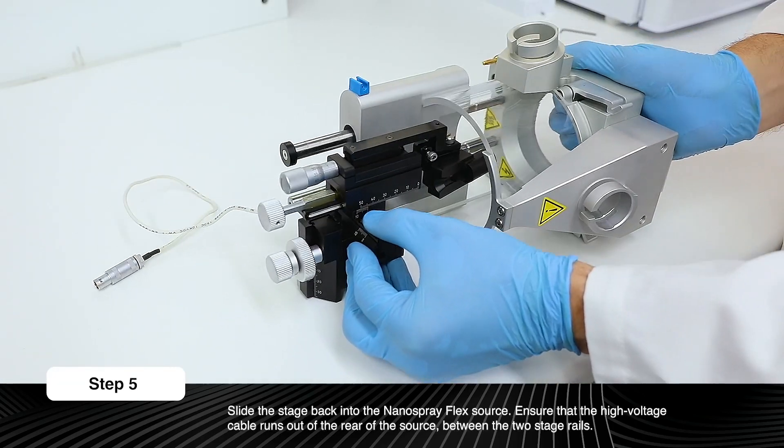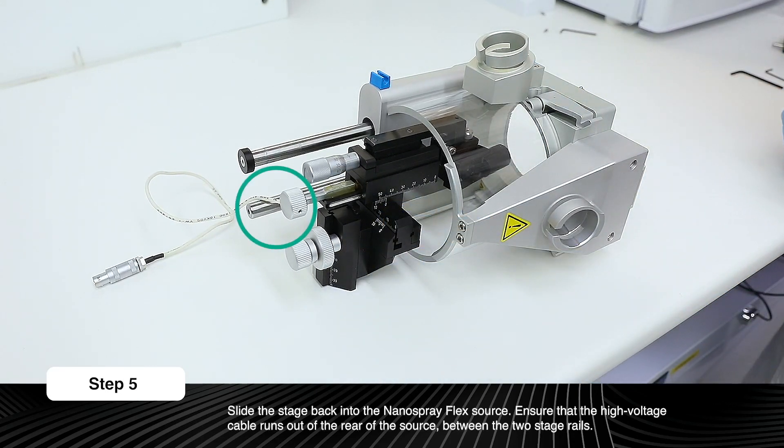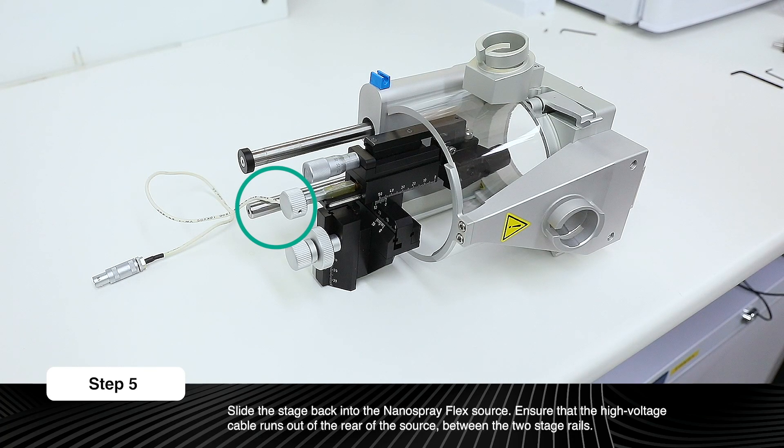Slide the stage back into the Nanospray Flex Source. Ensure that the high voltage cable runs out of the rear of the source between the two stage rails. The high voltage cable should not pass between the source mount and the stage.